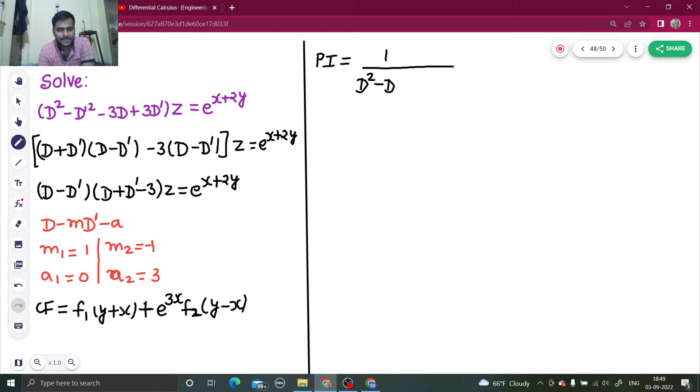So d square minus d d dash square minus 3d. Because if case of failure will come, that's why I am writing this form so that it will be easy to differentiate plus 3d dash operating on e power x plus 2y.